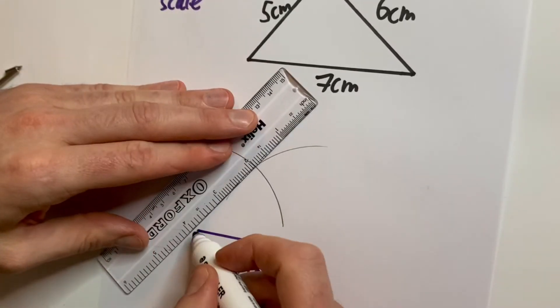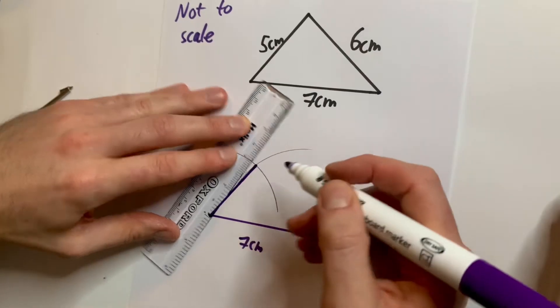And with our ruler, I'm going to join it up where they meet. It'll be really accurate.